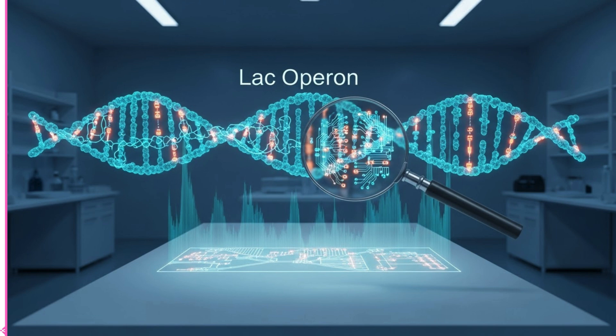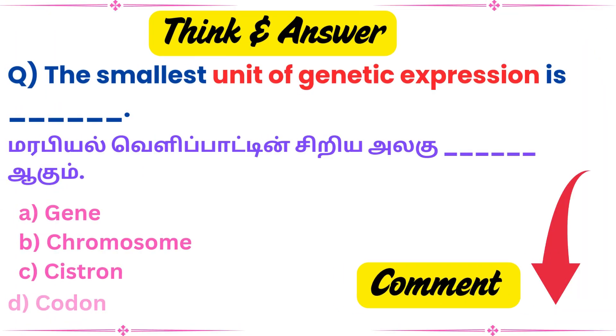Lac Operon. Think and answer. The smallest unit of genetic expression is dash.